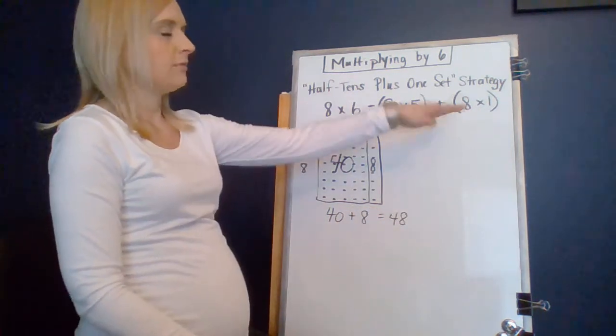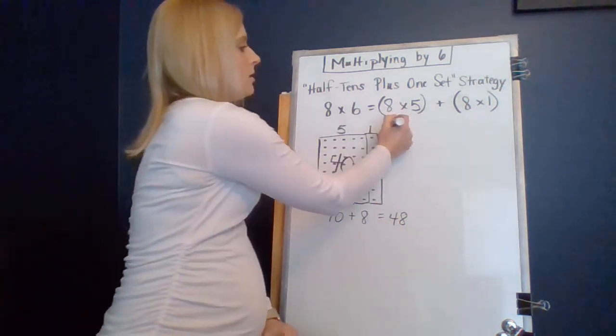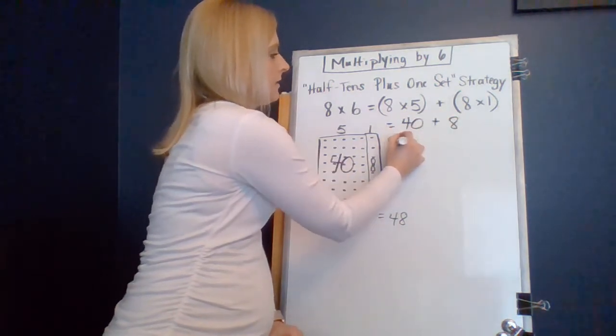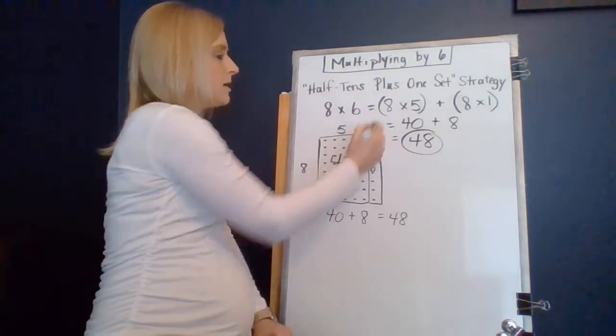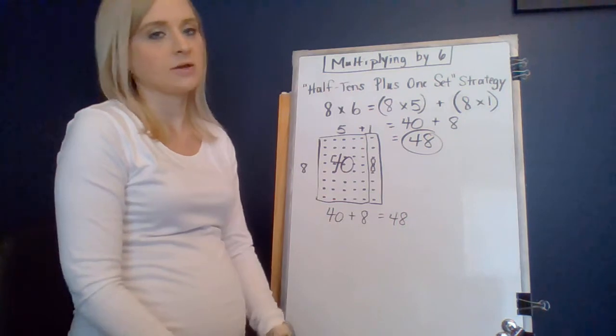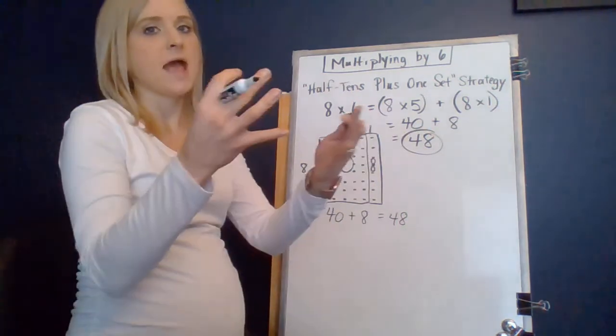When we put 40 plus 8 together, we get 48. So, when you're thinking numerically, like in expression or equation form, 8 times 5 is 40 plus 8, that equals that 48 that we get for 8 times 6. The reason we can do that is because of the distributive property of breaking apart those factors into smaller chunks that are easier for us to multiply, and then adding them together.